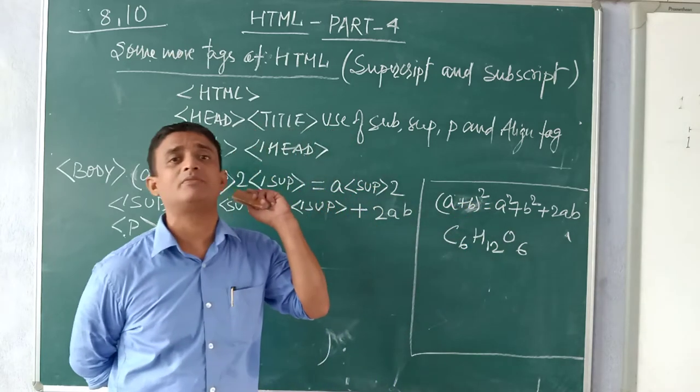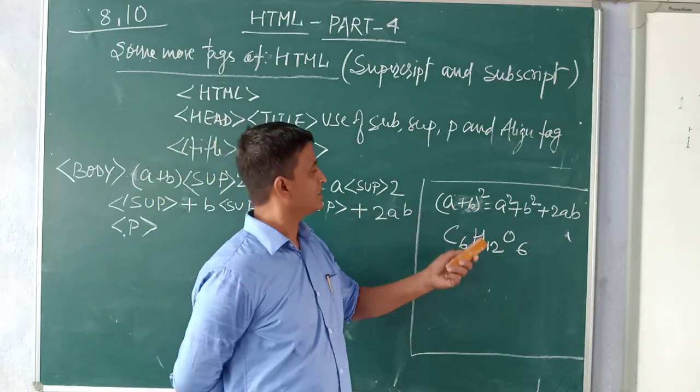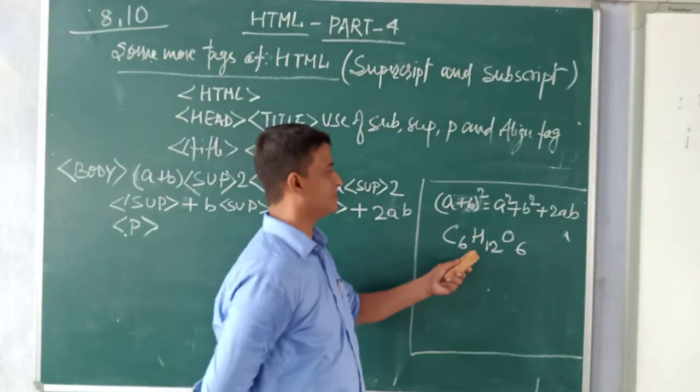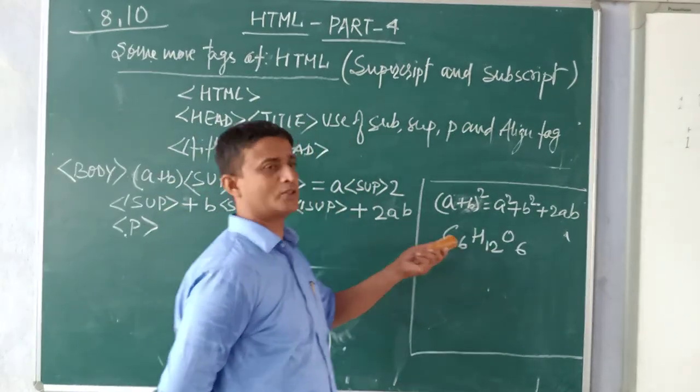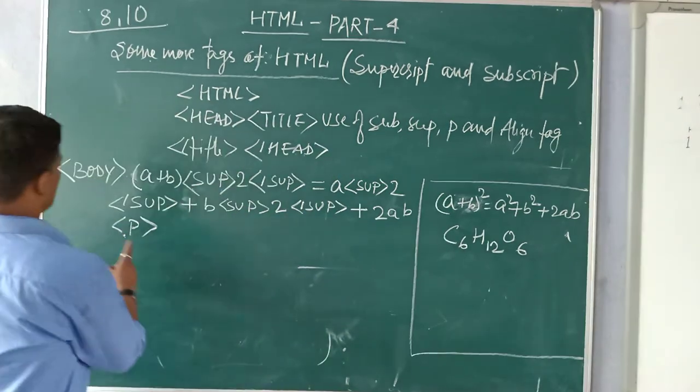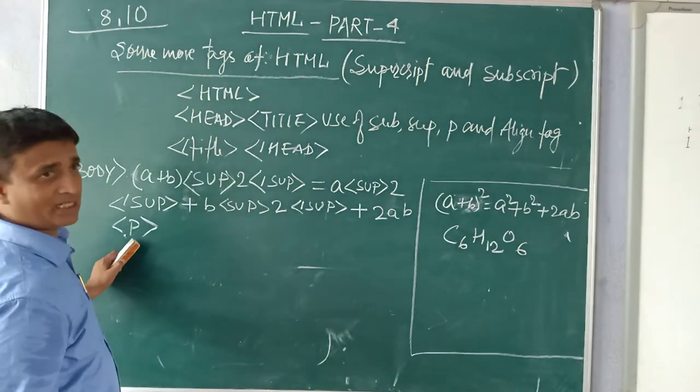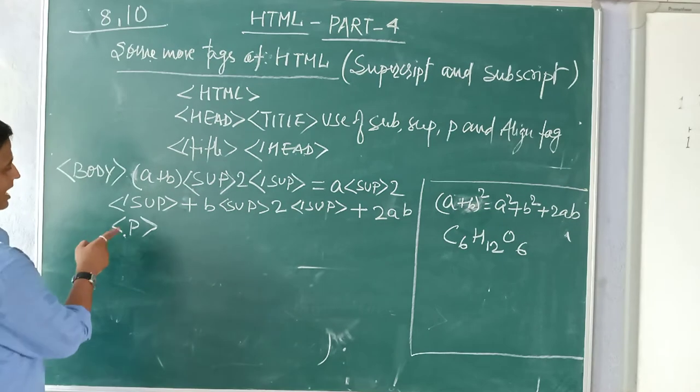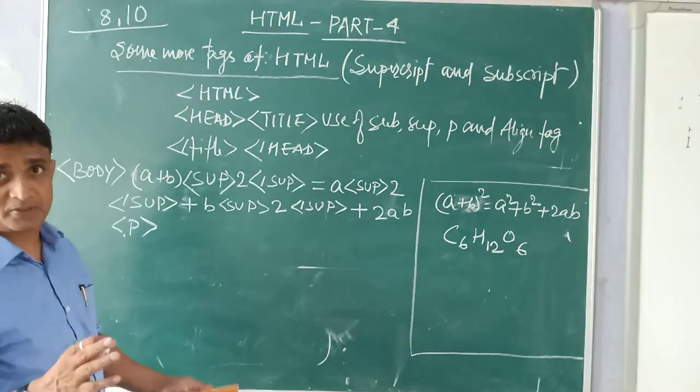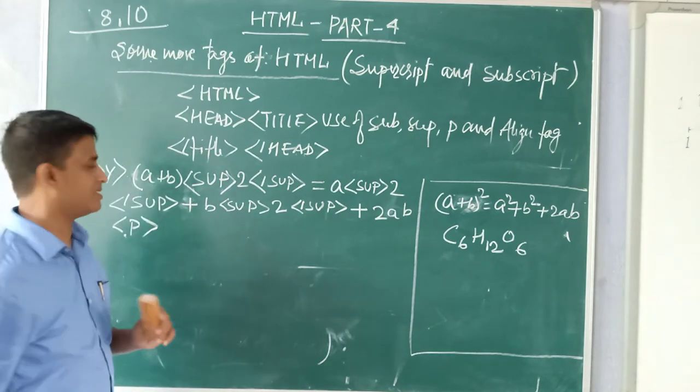Alignment - suppose I want this C6H12O6 suppose it is in the right side because I am not giving any alignment here so it will get displayed in the right side of the website. The second one I want to get displayed in the center.